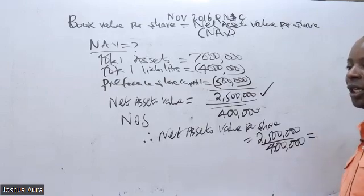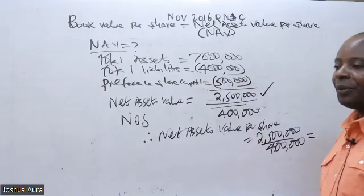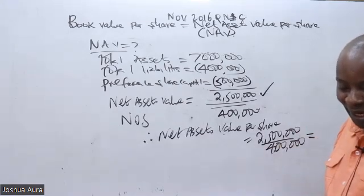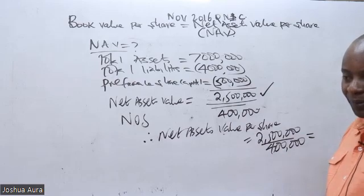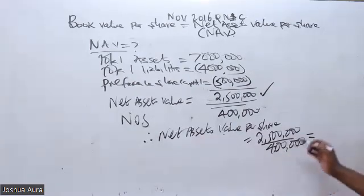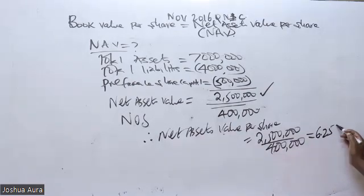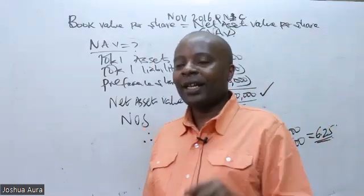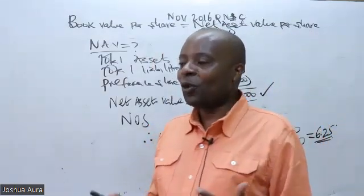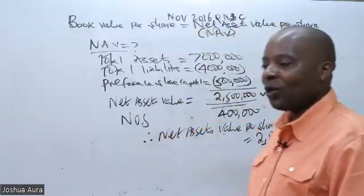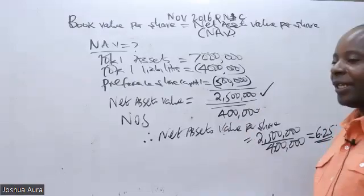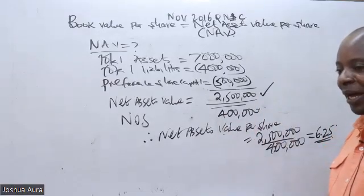This gives us 6.25. So it means that you should be able to sell each share at that price — 6.25. This is our book value per share. Are we together up to there? I'm trying to connect what I did yesterday with what I shall be doing today. This is quite a good reminder.